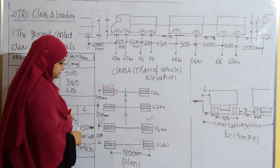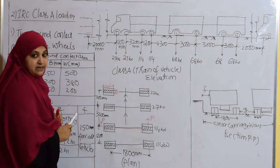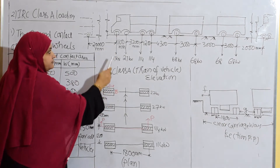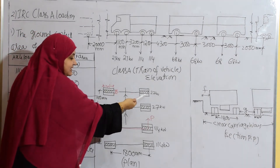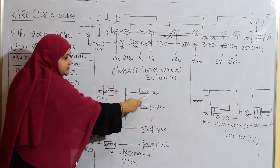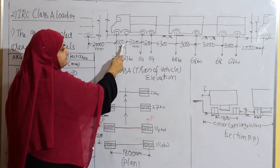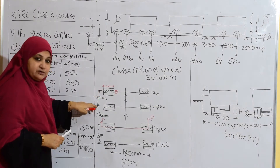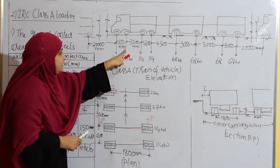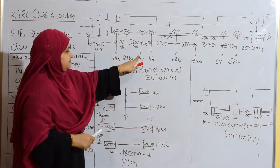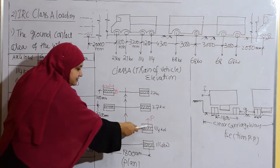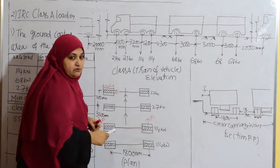This is the elevation and this is the plan. I have already drawn it, but I will explain how I have taken it. The first axle carries 27 kilonewton. The wheel of the first axle is on one side, and the other end of the axle has another wheel, separated by a distance of 1800 mm. The second axle is at a distance of 1100 mm centre to centre, with one wheel on each side, also carrying 27 kilonewton. The third axle is at 3200 mm from the second, with two wheels separated by 1800 mm, carrying 114 kilonewton.